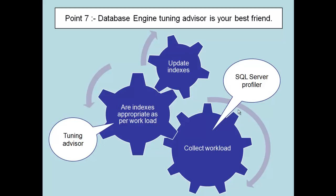In case you are working on a database which has thousands of tables, lots of stored procedures, and lots of transactions, it's humanly not possible to analyze that workload and come up with an accurate index plan. For the same, SQL Server has provided two tools: one is the SQL Profiler and the other is the Tuning Advisor. The SQL Profiler will help us automate the collection of the workload, while the Tuning Advisor will take the workload gathered by the SQL Profiler and come up with appropriate indexes.